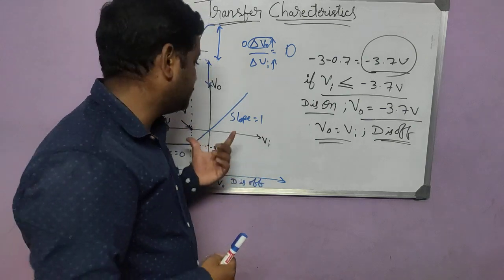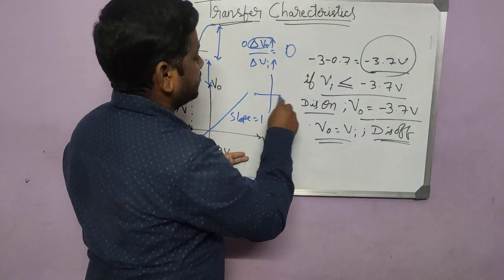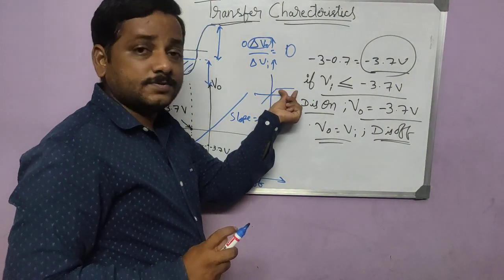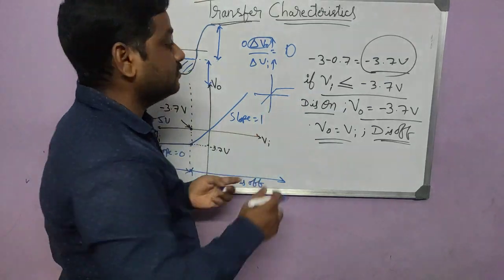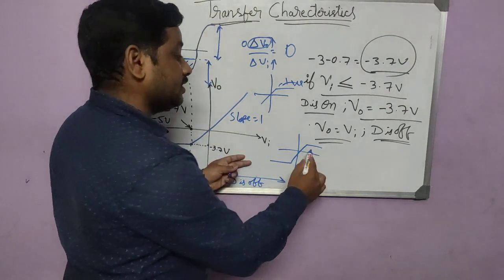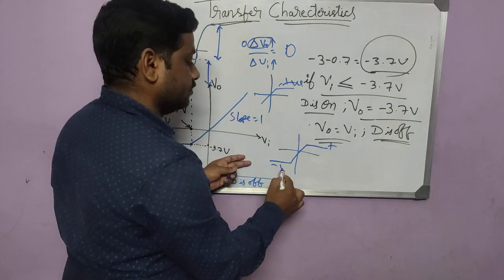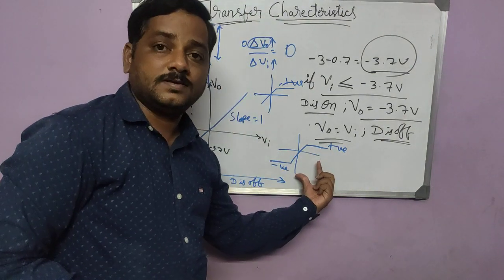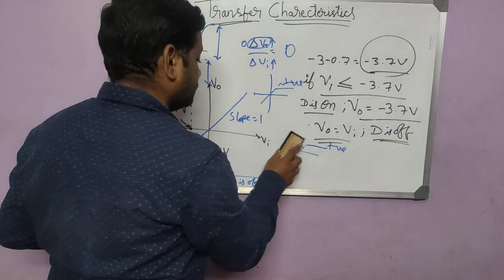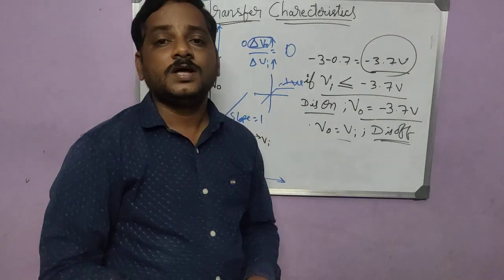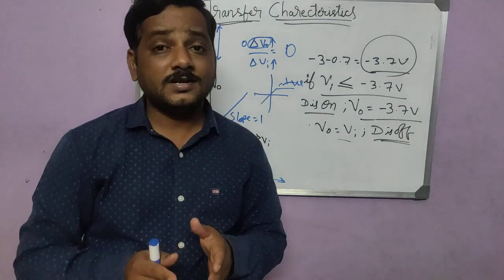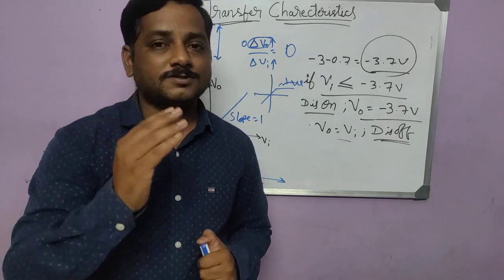If instead the constant portion were on the positive side and the slope on the negative side, that would indicate a positive clipper. If there is a constant in both positive and negative regions with a slope only in between, that is a double-ended clipper — which will be explained in further sessions. Transfer characteristics give a clear idea about what kind of clipper circuit it is.